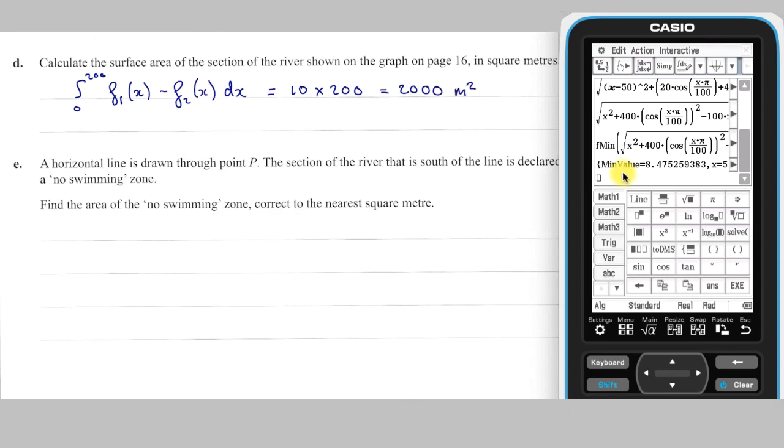Part E. There are a few different constructions that will help us determine the area of the no-swim zone. One way is to find the area between the line y equals 30 and the south bank and subtract the area between y equals 30 and the north bank. This can be done by subtracting two definite integrals. The bounds on these integrals come from values found previously, combined with the curved symmetry either side of x equals 100.